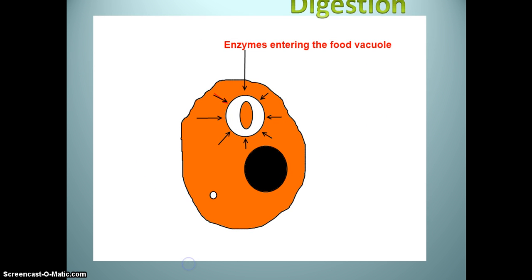Digestion. In amoeba, food is digested in the food vacuole by digestive enzymes. The enzymes from surrounding cytoplasm enter into the food vacuole and break down the food into small and soluble molecules by chemical reaction. The digestion in amoeba takes place inside the food vacuole due to which the food dissolves.